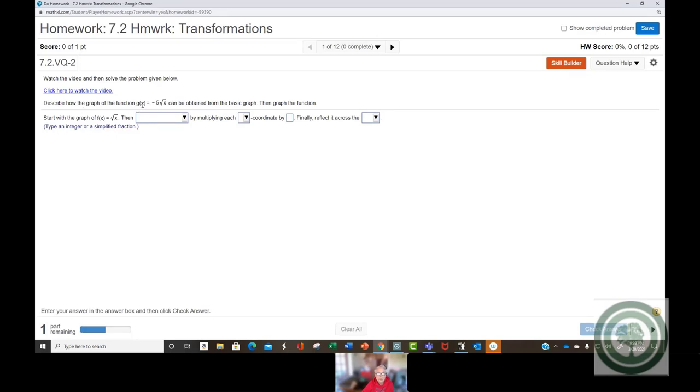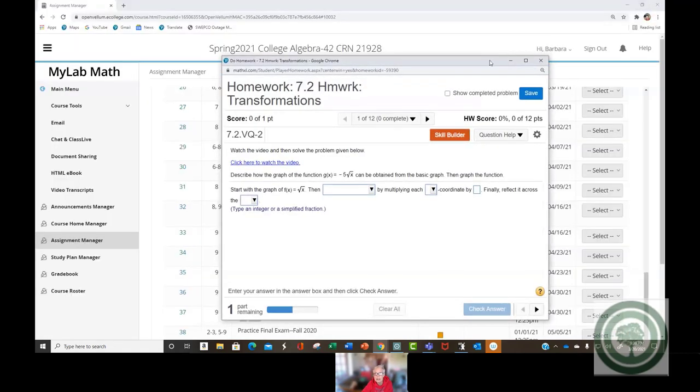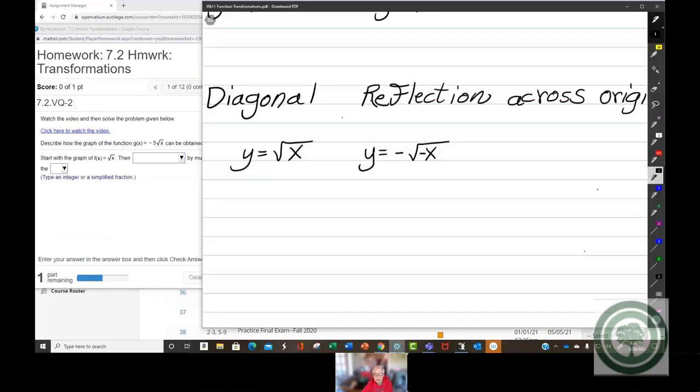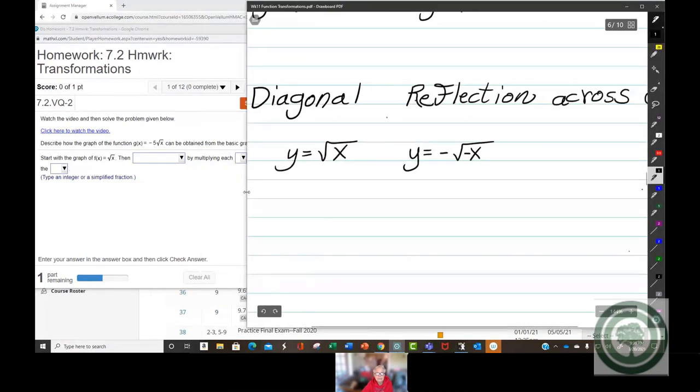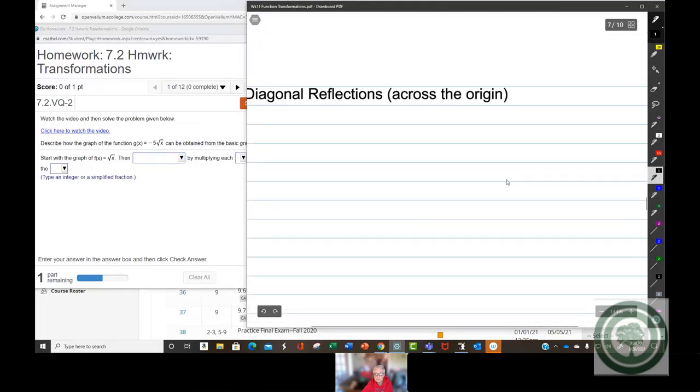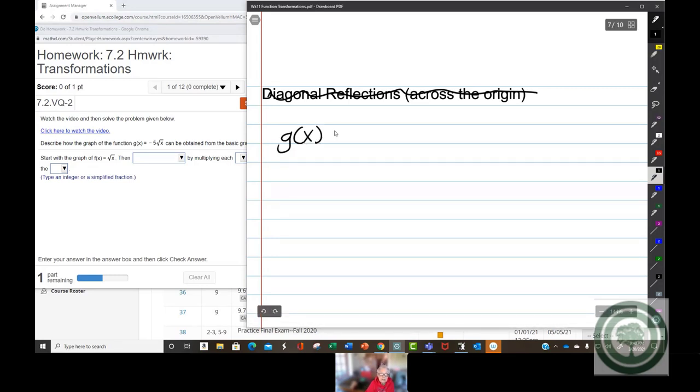Describe how the graph of the function g of x equals negative 5 times the square root of x. Let me write this bigger on here. So we move that. G of x equals, and this is number 1, g of x equals negative 5 times the square root of x.